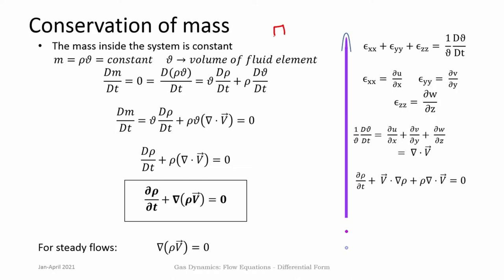Consider a very small, infinitesimally small fluid element. The mass inside that particular element is rho multiplied by that small volume. We say that mass is constant — mass does not change — so dm/dt = 0 as you follow that particular fluid particle or fluid parcel. This gives d(rho·V)/dt = 0, and using the rules of differentiation this consists of changes to density and changes to volume. Changes to volume can be related to how this fluid volume changes due to velocity gradients.